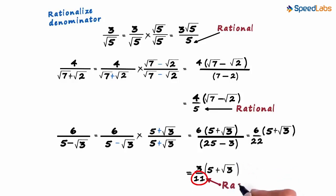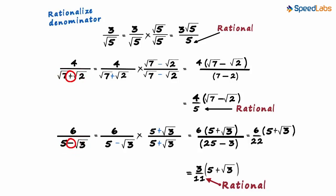Since 11 is a rational number, we have successfully got the original number in standard form. Remember, whenever we have two terms that form an irrational number, just change the sign in between them to get the rationalizing factor — plus will become minus and minus will become plus.